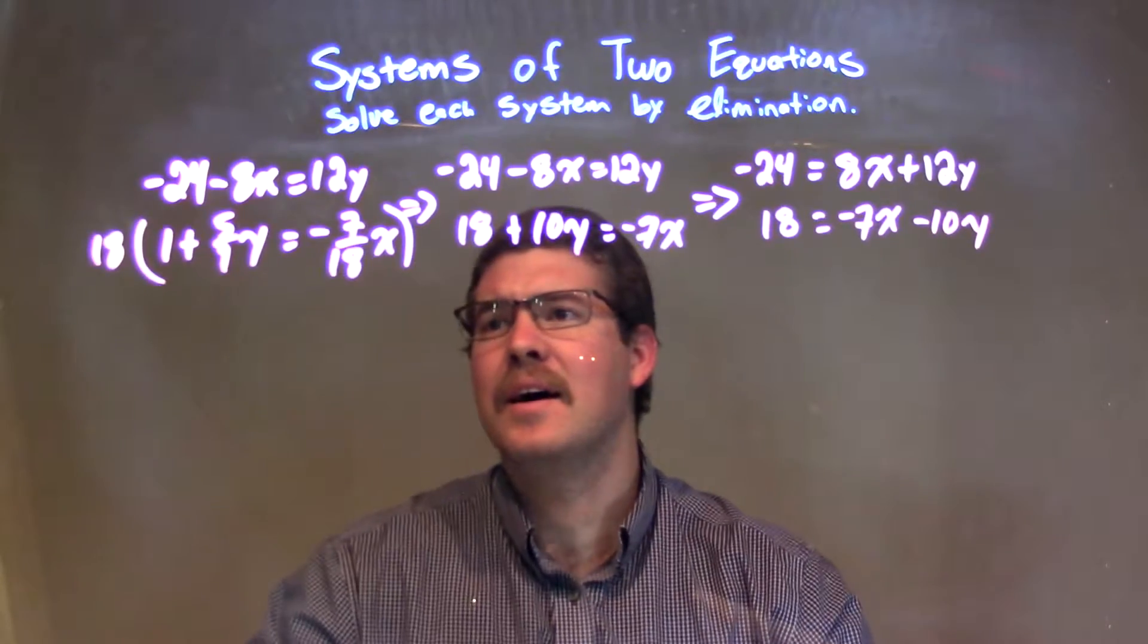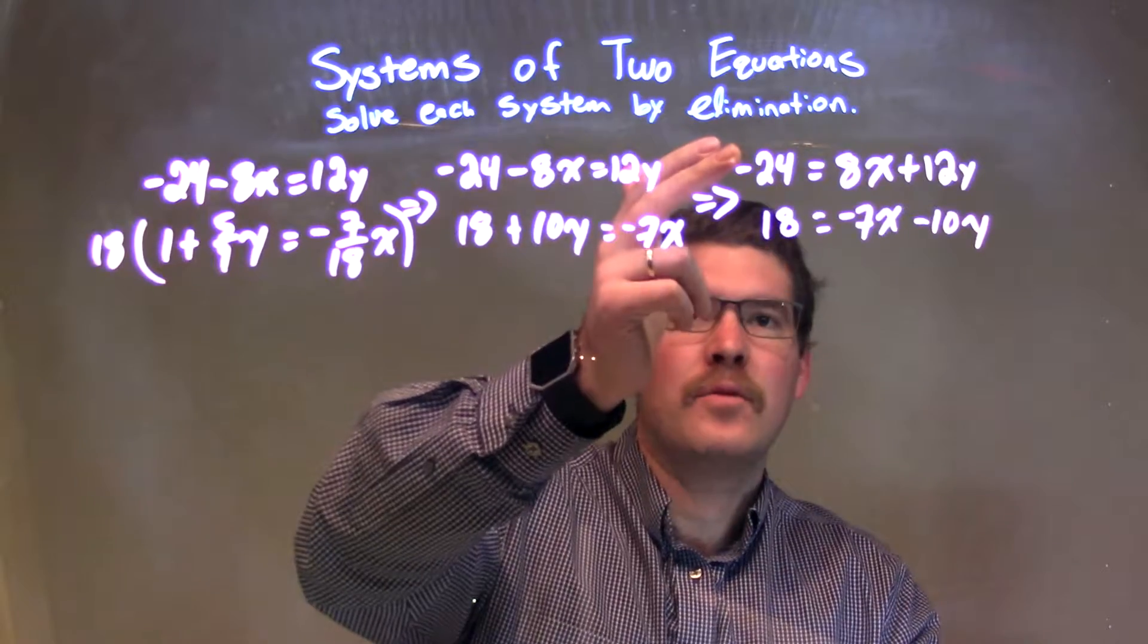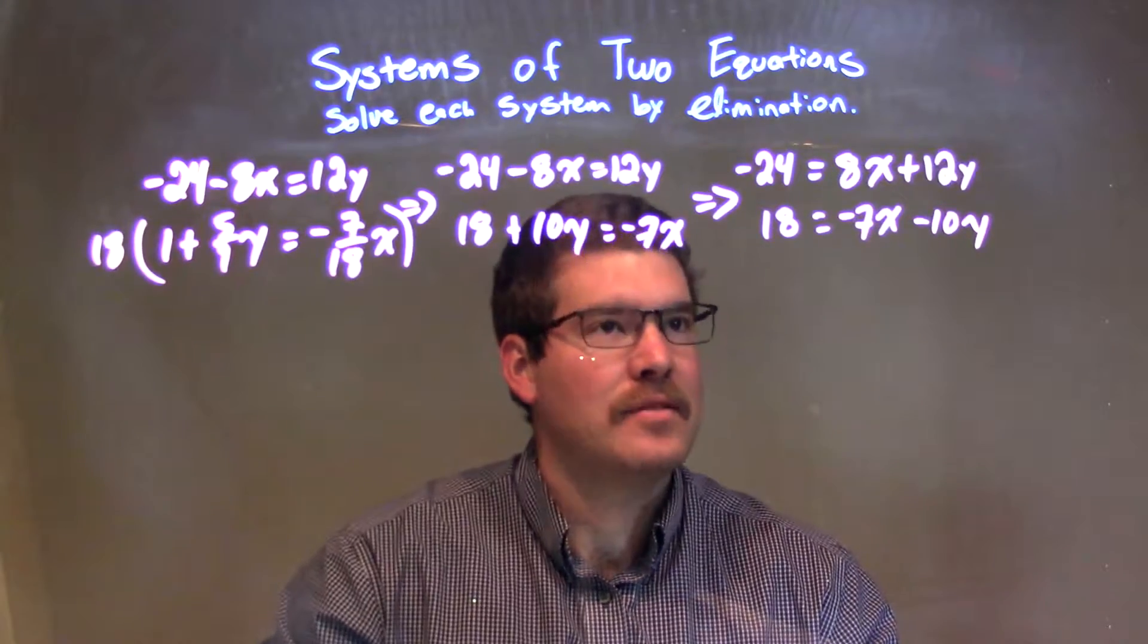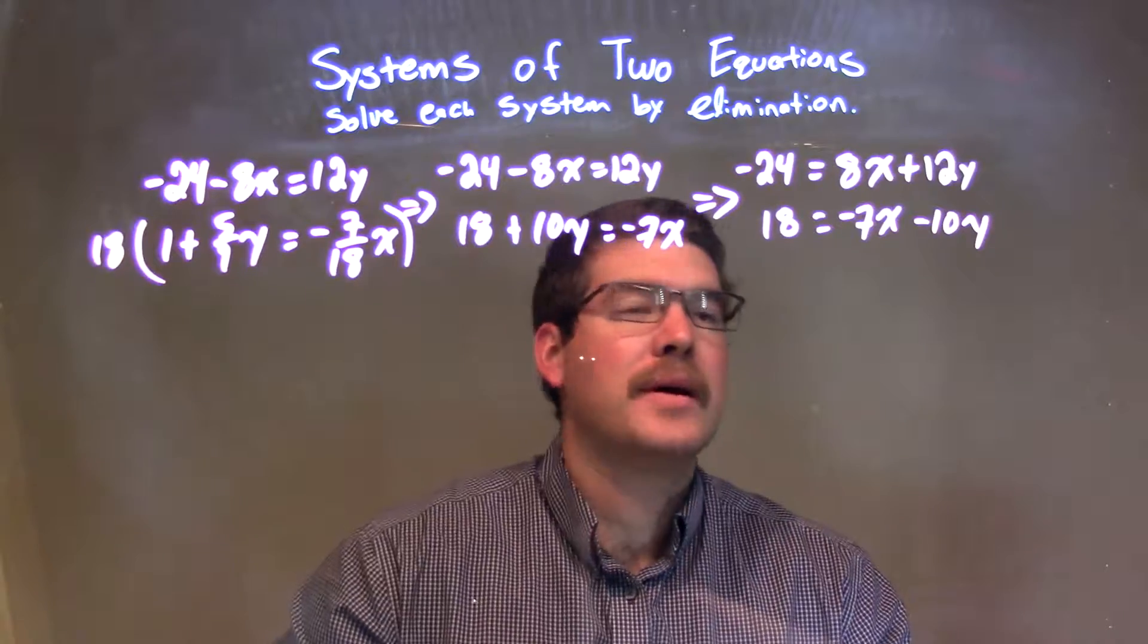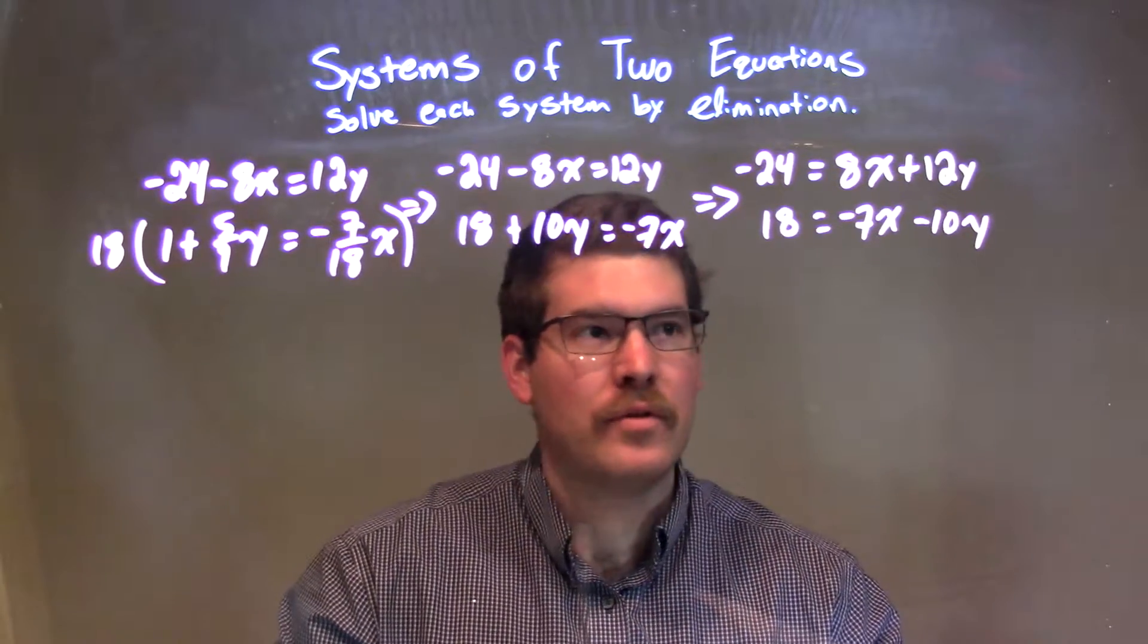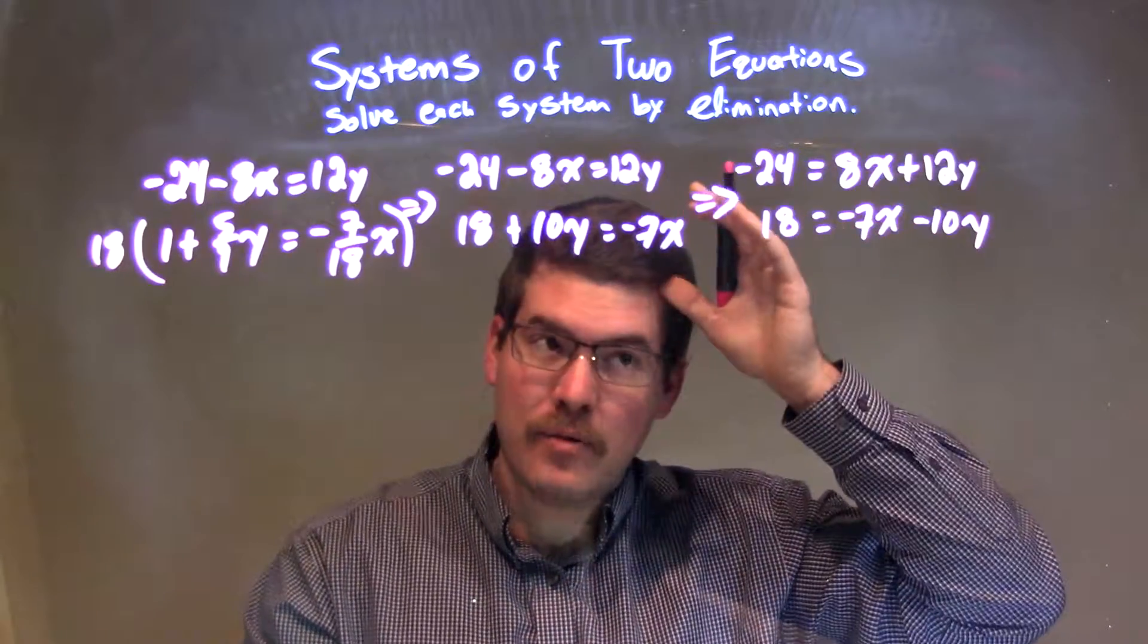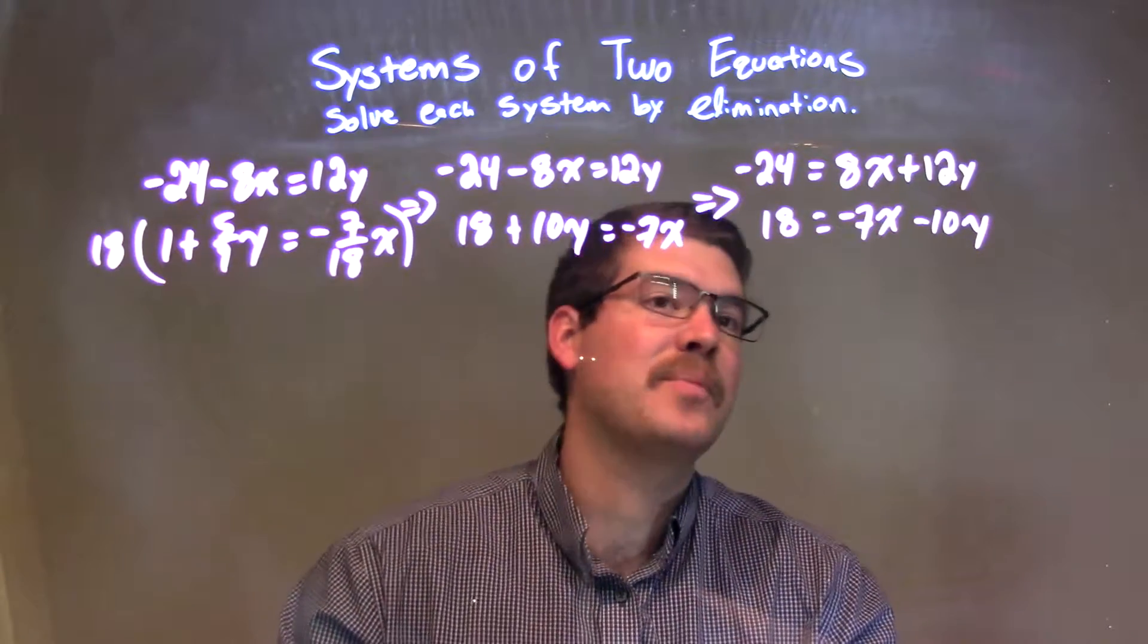So, now this becomes a little tricky here. We have negative 24 equals 8x plus 12y, and 18 equals negative 7x minus 10y. And so, really what we want to do now is how can we get all of this to essentially eliminate one of the variables. What can I multiply one by the other to have really the same variable?